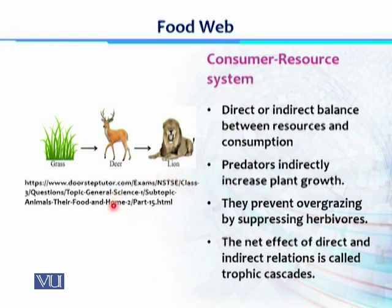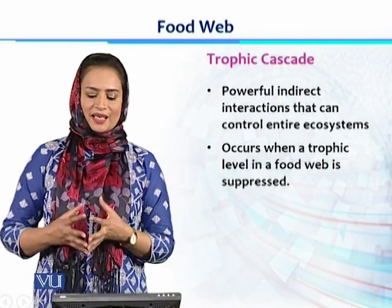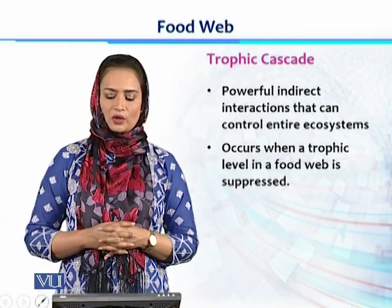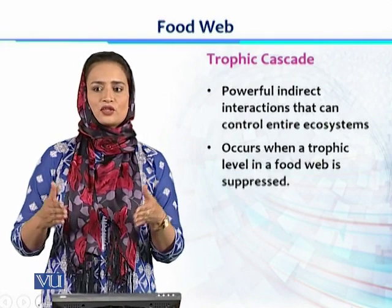When the size of the deer population is reduced, more resources are available in the ecosystem and habitat, and ultimately the grass population size increases. That is a direct effect of two trophic levels on each other. In this way, the consumer resource system regulates the population size of different trophic levels. This net effect generated by a whole food chain or food web across different trophic levels — flowing from top predators down to bottom producers — is called a trophic cascade.